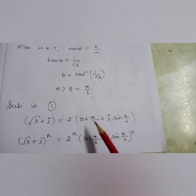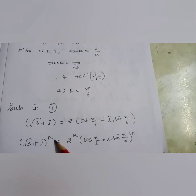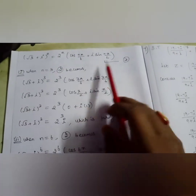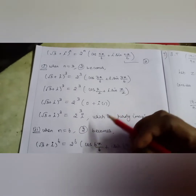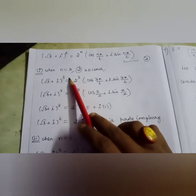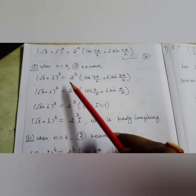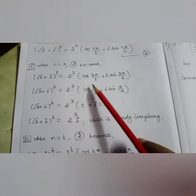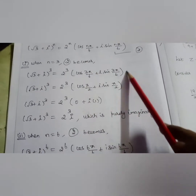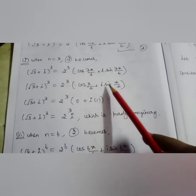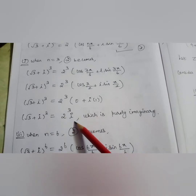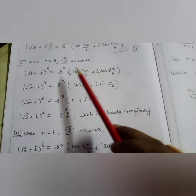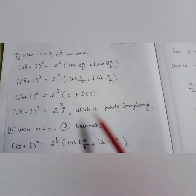We have to find the least value of n by trial and error, checking from n = 0, 1, 2, and so on. When n = 3: (√3 + i)^3 = 2³(cos(3π/6) + i sin(3π/6)) = 8(cos(π/2) + i sin(π/2)). Since cos(π/2) = 0 and sin(π/2) = 1, this becomes 8i, which is purely imaginary. So the least positive integer n = 3 makes the expression purely imaginary.